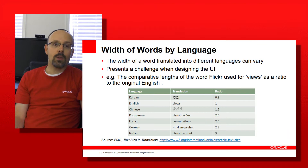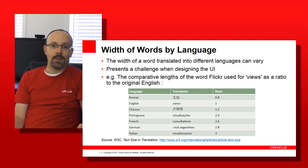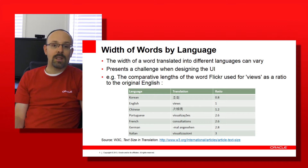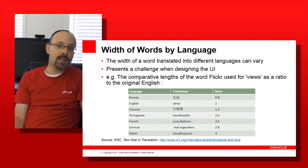When designing screens for internationalization, one of the first challenges you will have to overcome is the need for space. Not every language needs the same space in order to express the same ideas. For example, if you go on the Flickr website, they selected in English a word to express the number of times an image was seen — they used 'views.' The very same idea expressed in different languages will occupy much more or a bit less space depending on the language.